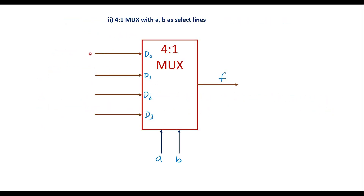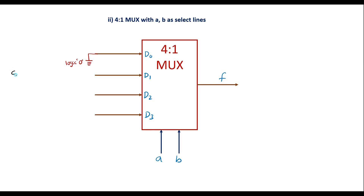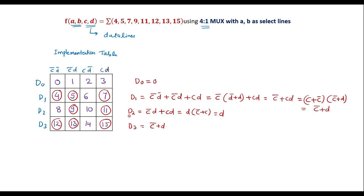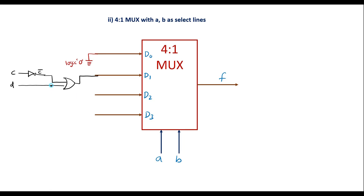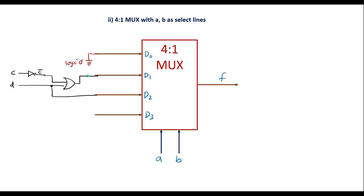Now we connect the inputs to the 4-to-1 MUX. d0 is connected to ground (logic 0). For d1 = c-bar + d, we pass c through an inverter to get c-bar, then feed c-bar and d into an OR gate whose output connects to d1. d2 = d, so the d input is directly connected to d2. d3 = c-bar + d, so the same OR gate output also connects to d3. This completes the implementation using the 4-to-1 MUX with a, b as select lines and c, d as data lines. Thank you for watching.